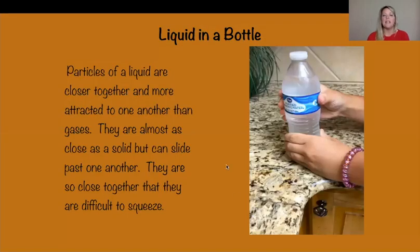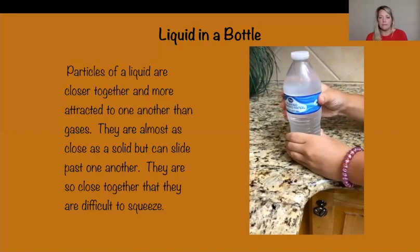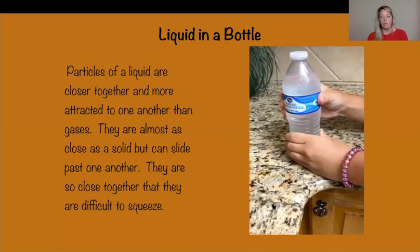Next, you're going to see liquid in a bottle. Particles of a liquid are very close together and more attracted to one another than gas. They are almost as close as a solid but can slide past one another. They are so close together they are difficult to squeeze. As you see in the demonstration, we're able to squeeze the bottle but we cannot compress it completely, because those particles are still very close together but not as close as a solid.